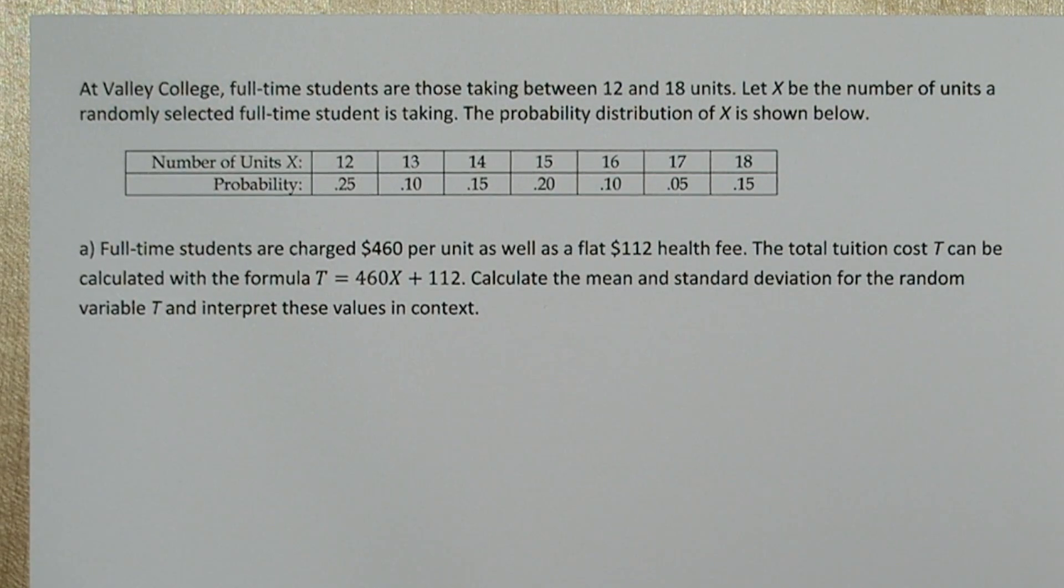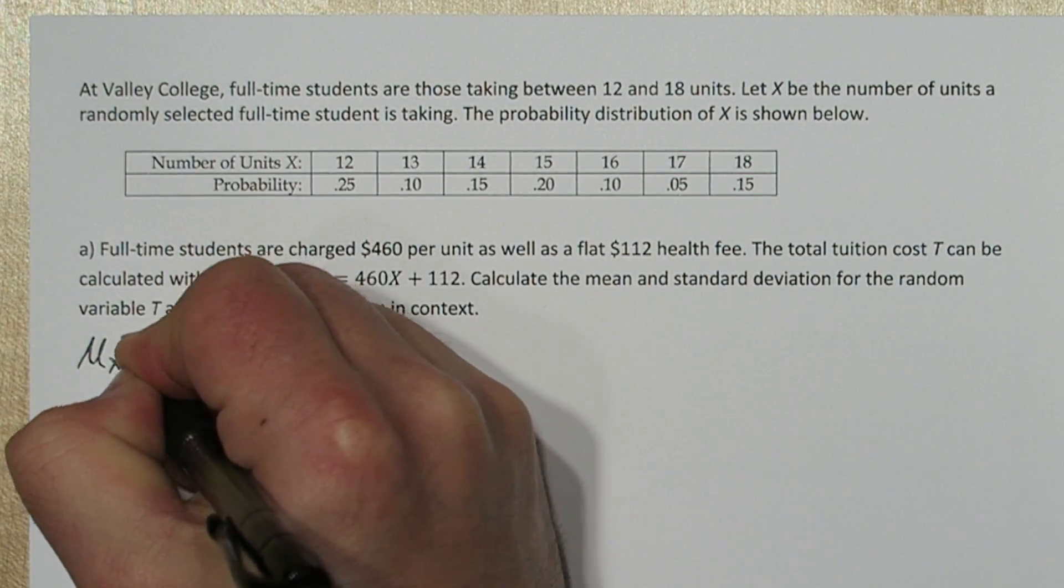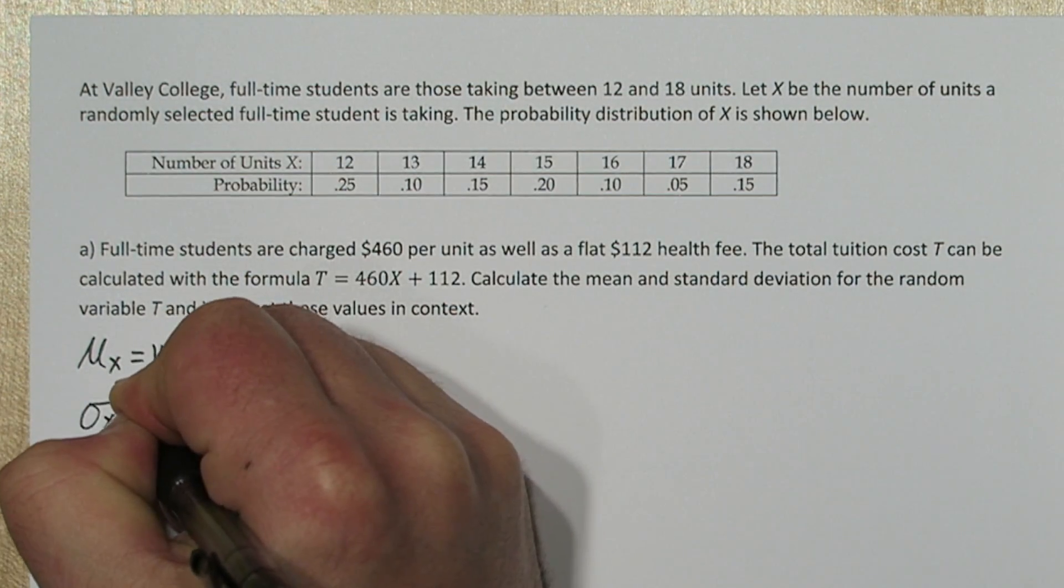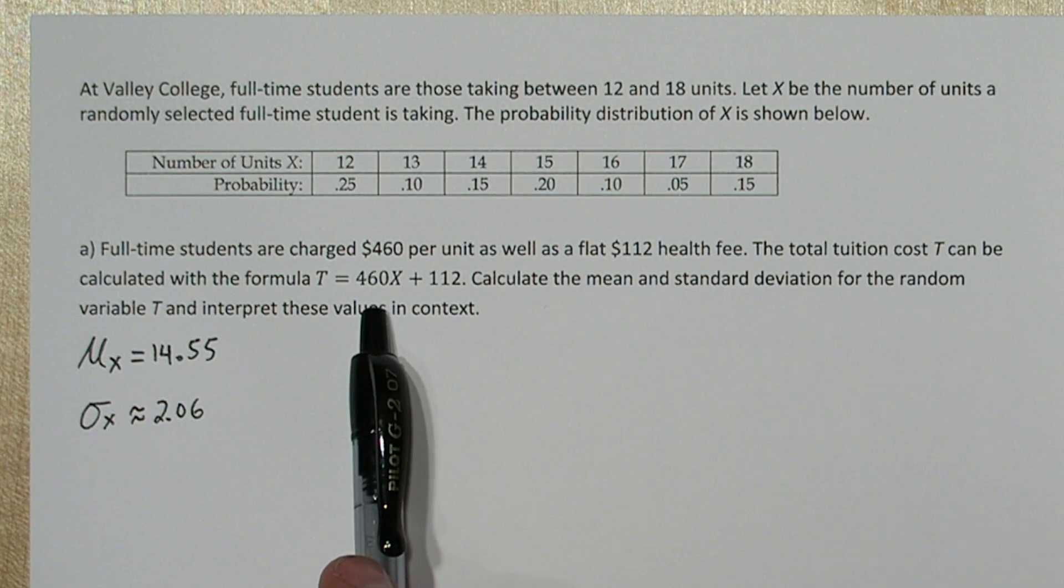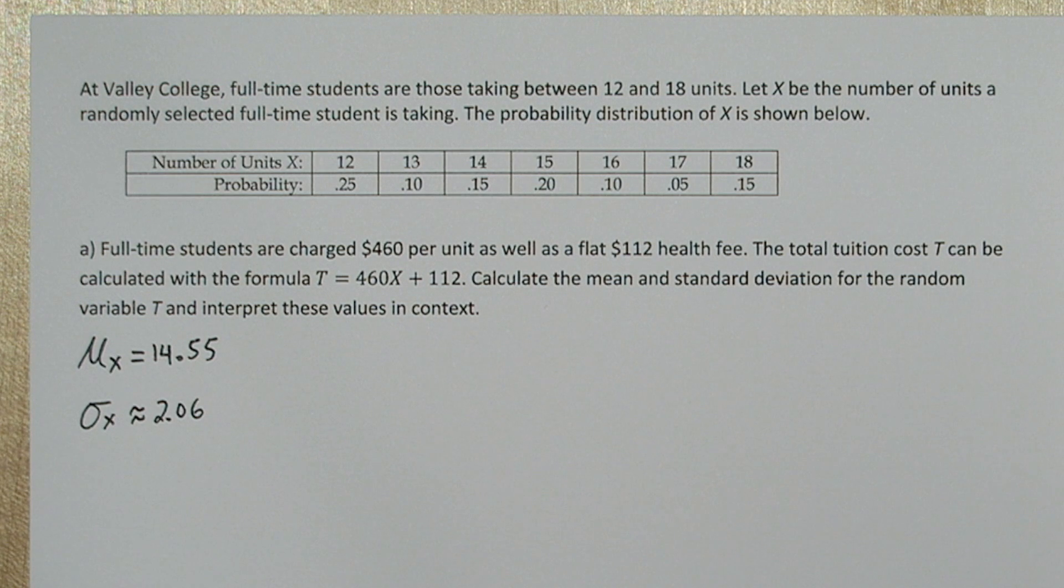But this is the mean and standard deviation of x. We're interested in the mean and standard deviation of t, which has the following linear transformation. It takes our number of units, multiplies by 460, and then adds 112.